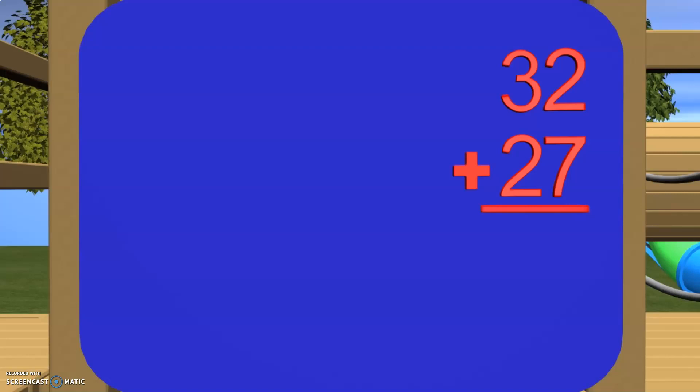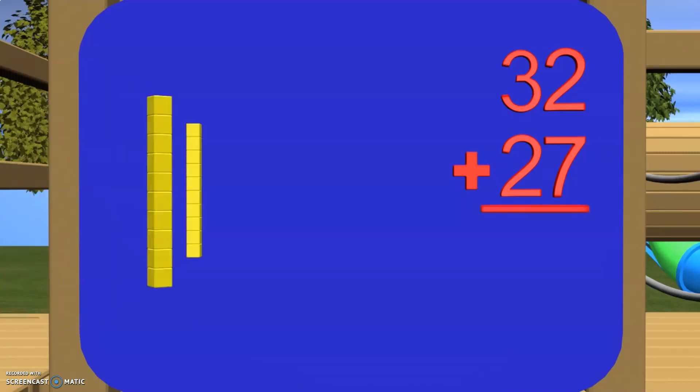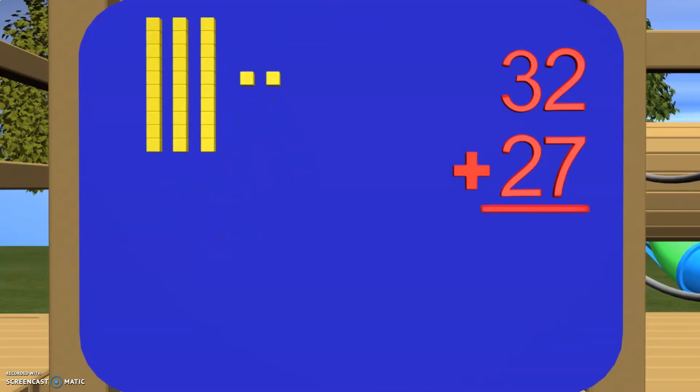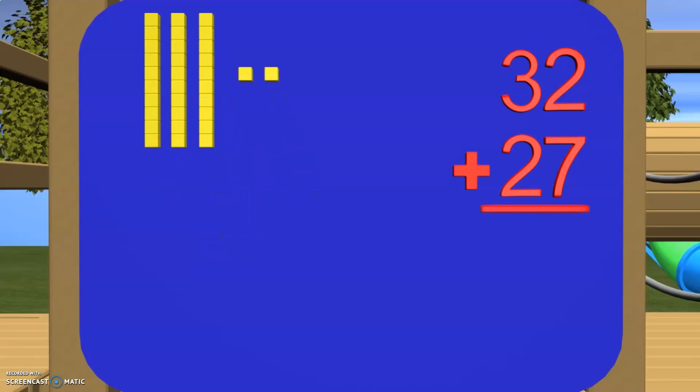Great! We do have them lined up correctly and now we can use some base 10 blocks to help us add them together. So to get 32, we need 10, 20, 30. Now I have the 3 in the tens place but I still need the blocks for the ones place so I need 2 of the ones blocks. Now on to the 27. We need to get 27 blocks and we need to start in the tens place. So here is 10, 20.